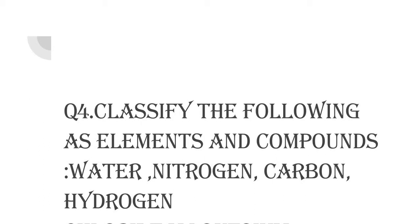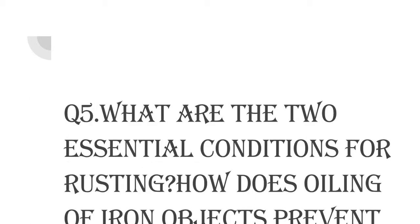Question number 5: What are the two essential conditions for rusting? How does oiling of iron objects prevent rusting? The answer was the presence of oxygen and water are two essential conditions for rusting of iron. Absence of one or both of them can prevent rusting.